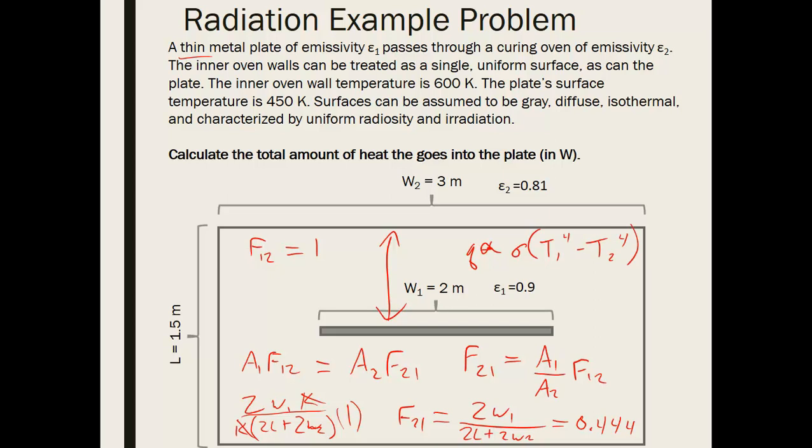Times T1 to the fourth minus T2 to the fourth. So this sigma times T1 to the fourth is known as the emissive power of surface one. And similarly, sigma times T2 to the fourth is known as the emissive power of surface two.